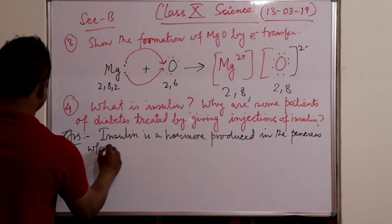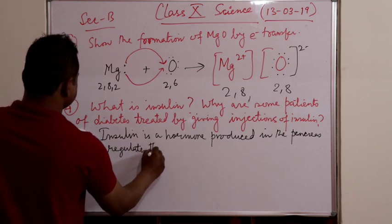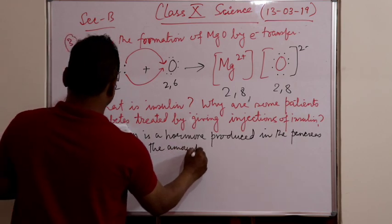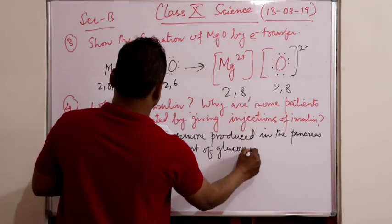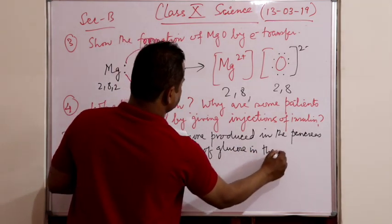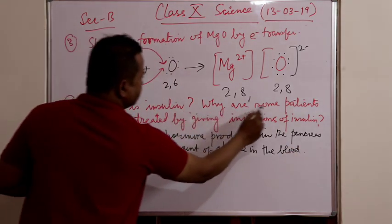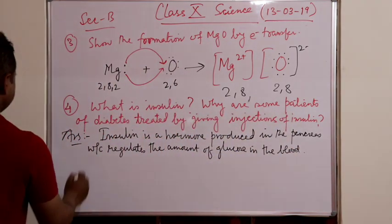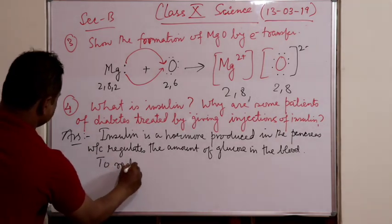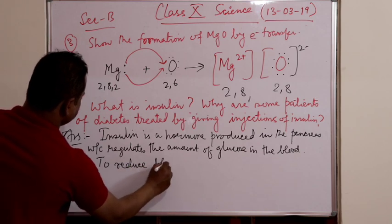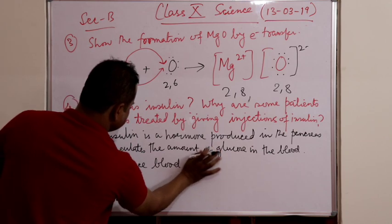So in the answer, what you will write: first is what is insulin. It is a hormone. Insulin is a hormone produced in the pancreas which regulates the amount of glucose in the blood.